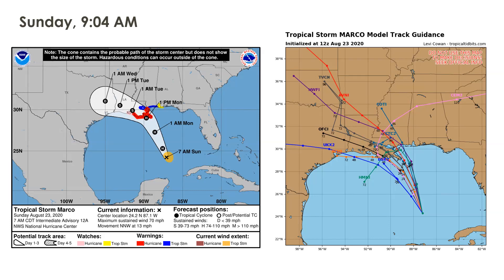This example is from August last year. We just had Hurricane Ida come through Louisiana. Let's go back to August 23rd, 2020 — we had two storm systems in the Gulf of Mexico. On the left map, the X marks where Tropical Storm Marco was at 7 a.m. Sunday. By 1 a.m. Monday it was predicted to be a hurricane making landfall right along the Louisiana coast at 1 p.m. Monday.